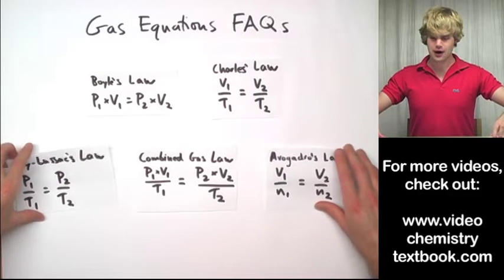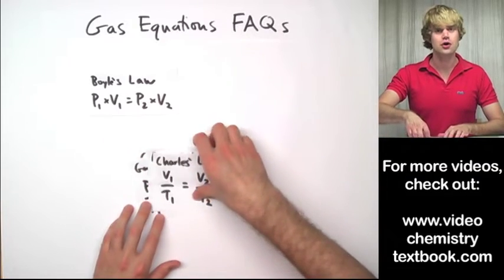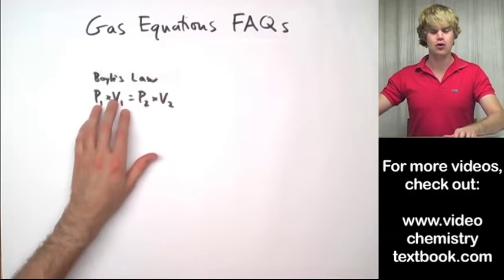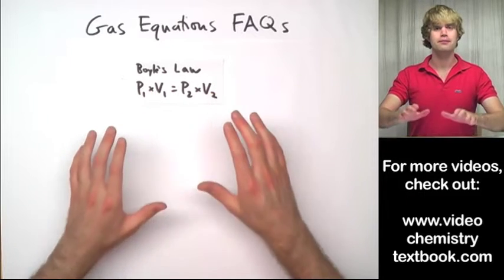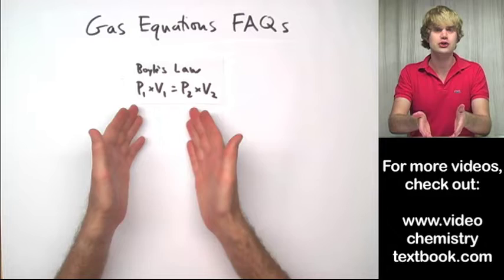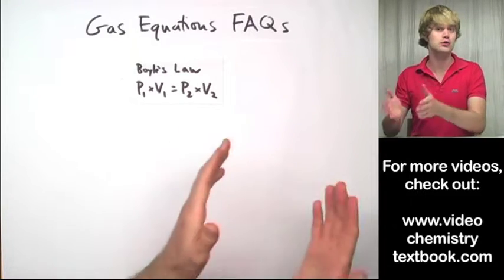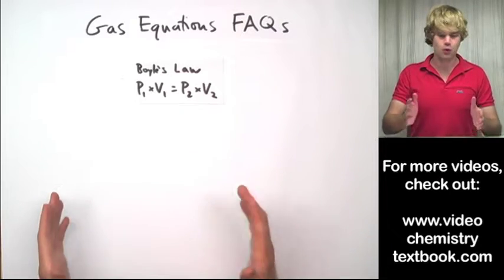Another common question is about the units that you should be using and I'll use Boyle's Law as an example. I get the question a lot: what should the pressure units be when I use Boyle's Law, what should the pressure units be when I use Gay-Lussac's Law or Charles' Law?